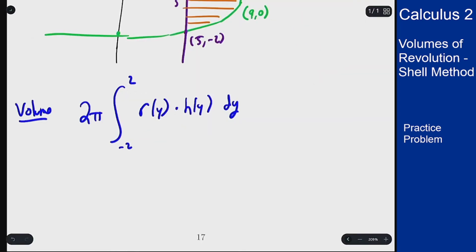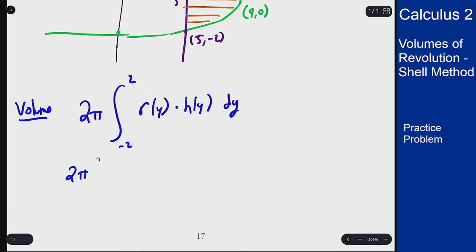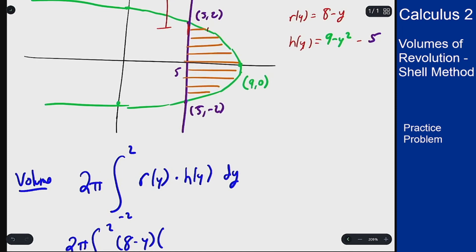So now we can set up our integral. 2 pi integral minus 2 to 2, radius was 8 minus y, height was 4 minus y squared.